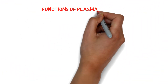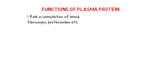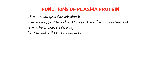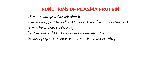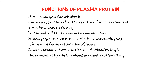Now the functions of plasma proteins. No. 1, role in coagulation of blood: fibrinogen, prothrombin, and other clotting factors make the definitive hemostatic plug. No. 2, role in the defense mechanism of the body: gamma globulins form antibodies. Antibodies help in the immune response by opsonizing and marking the foreign particle to be phagocytosed by phagocytes.